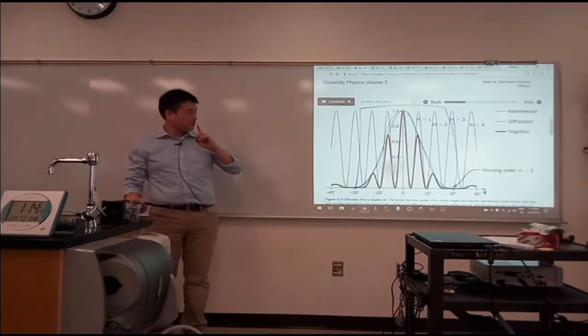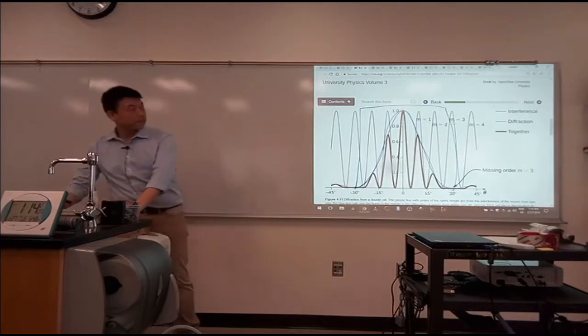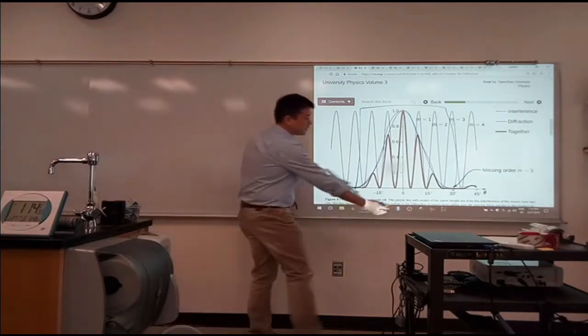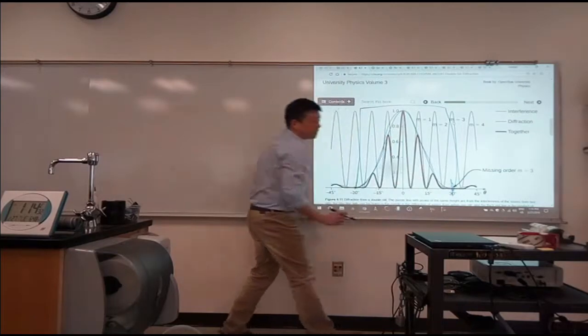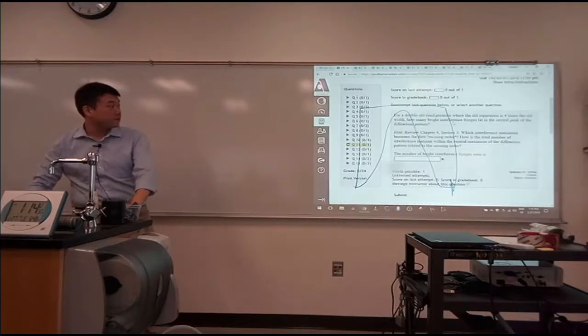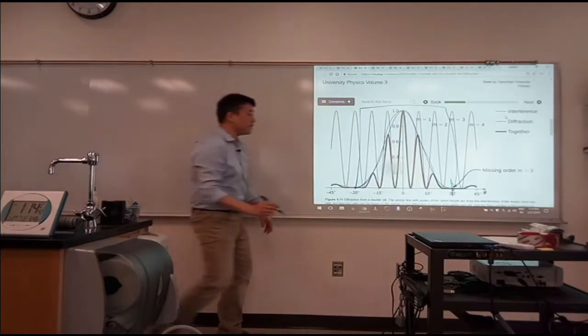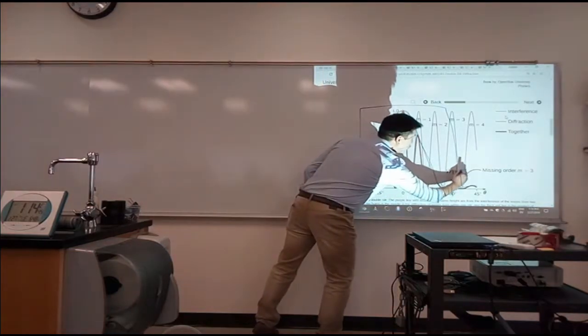So the easiest way to do this is by counting the order. So you first identify the order that would be missing, and hopefully based on the lab that you did and everything else, from this information, slit separation is four times the slit width, you can quickly get that this missing order here will be four.